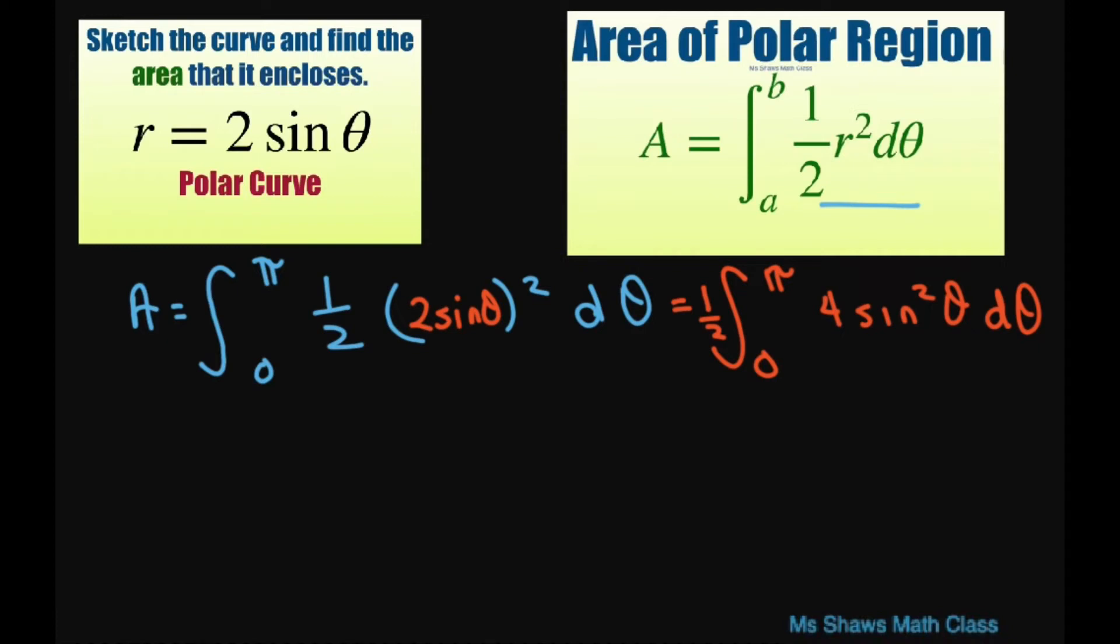For integration, we're going to use the identity for sine squared. And I'm going to go ahead and pull this 4 out. So I'm going to put 4 times 1 half. That's going to be 2. I'll just keep it here. Times 1 half. And then we have from 0 to pi. And I'm going to write this as 1 half times 1 minus cosine of 2 theta with that identity.